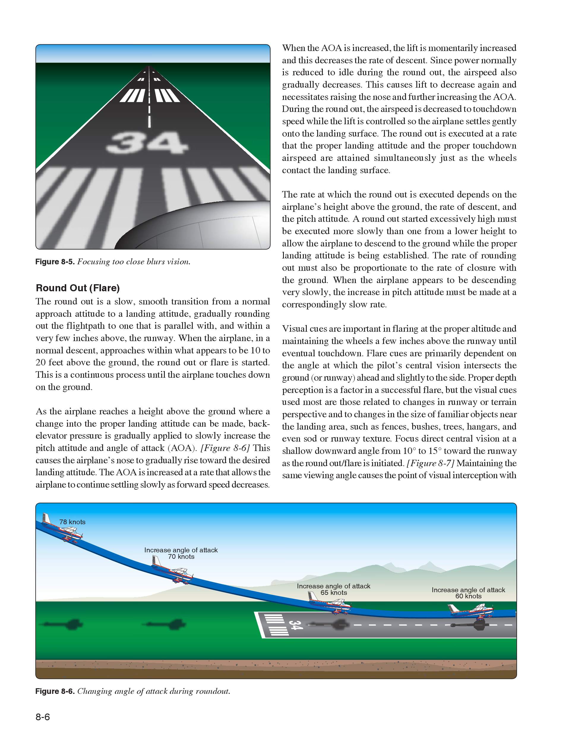Roundout/Flare. The roundout is a slow, smooth transition from a normal approach attitude to a landing attitude, gradually rounding out the flight path to one that is parallel with and within a very few inches above the runway. When the airplane in a normal descent approaches within what appears to be 10 to 20 feet above the ground, the roundout or flare is started. Back elevator pressure is gradually applied to slowly increase the pitch attitude and angle of attack (AOA), causing the airplane's nose to gradually rise toward the desired landing attitude. The AOA is increased at a rate that allows the airplane to continue settling slowly as forward speed decreases.